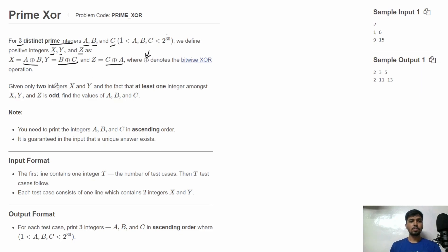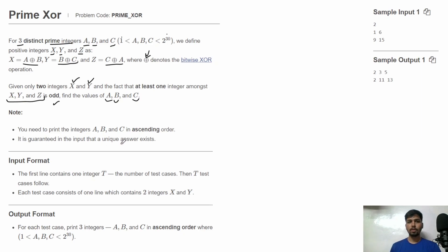Now we are given only two integers x and y, and we need to find out the values of a, b and c. We are also given one fact that out of x, y and z, at least one integer is odd. We need to print the values of a, b and c in ascending order, and it is also given that an answer will always exist for all valid inputs.